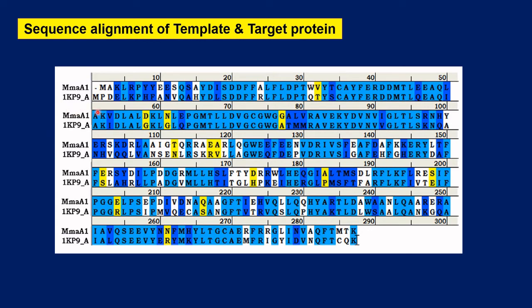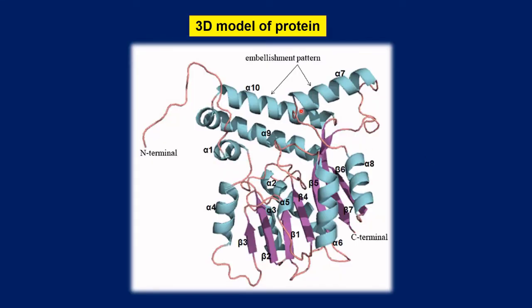I obtained the template as 1KP9. When I performed the sequence alignment for this target and template, this is the sequence alignment of these proteins. After that, the 3D model was generated using Modeler.